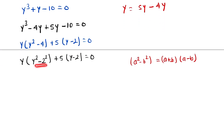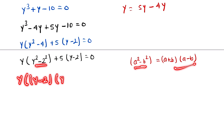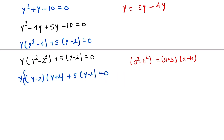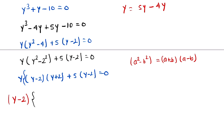Now y² − 4 is in the form of a² − b², since 4 = 2². So y² − 2² factors as (y − 2)(y + 2). We now have (y − 2)(y + 2) + 5(y − 2) = 0. Taking the common factor (y − 2) out gives (y − 2) times (y + 2 + 5) = 0.